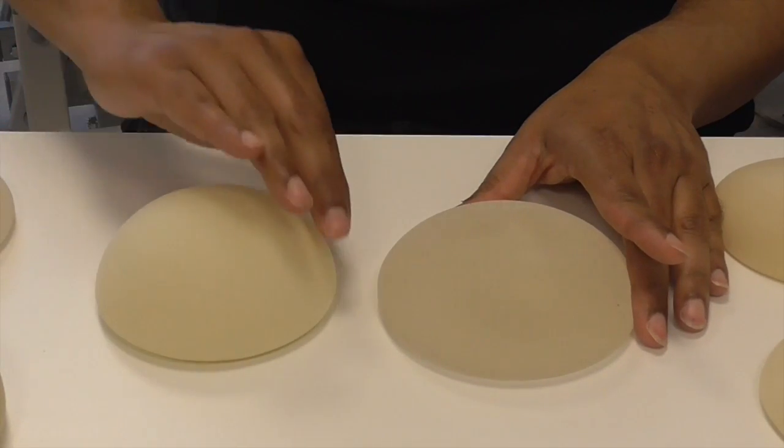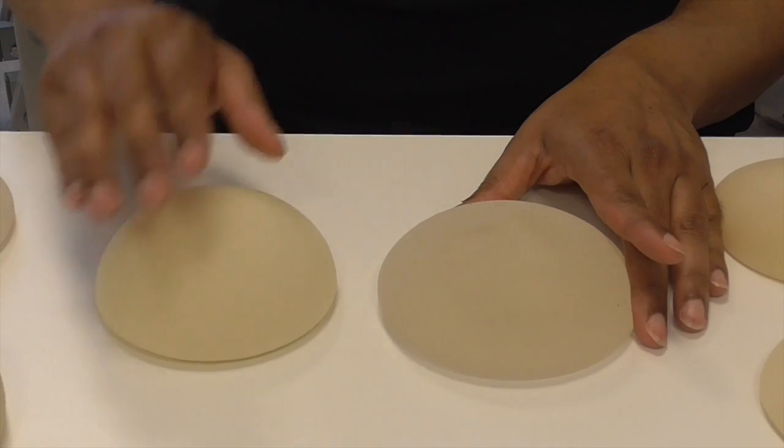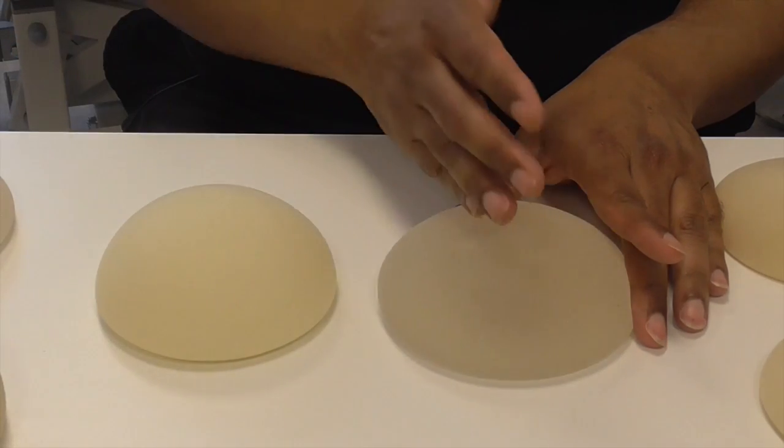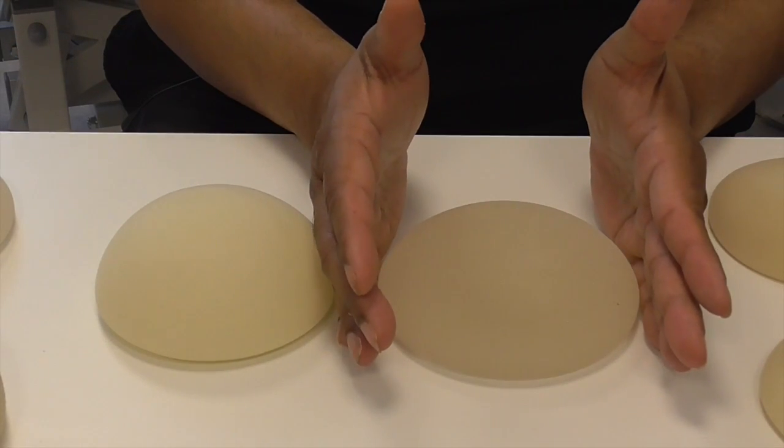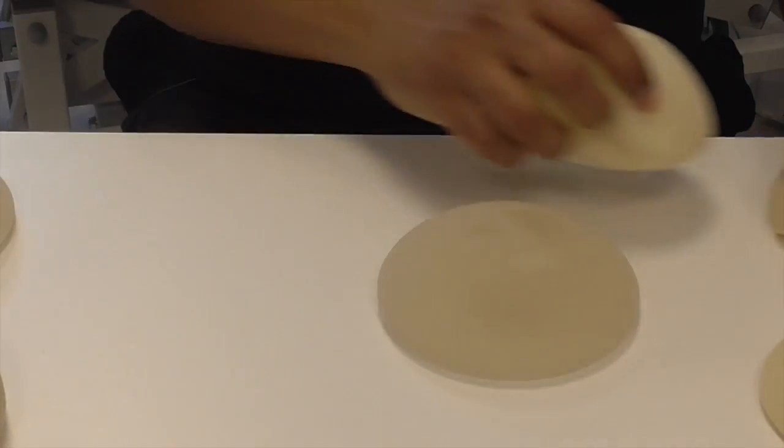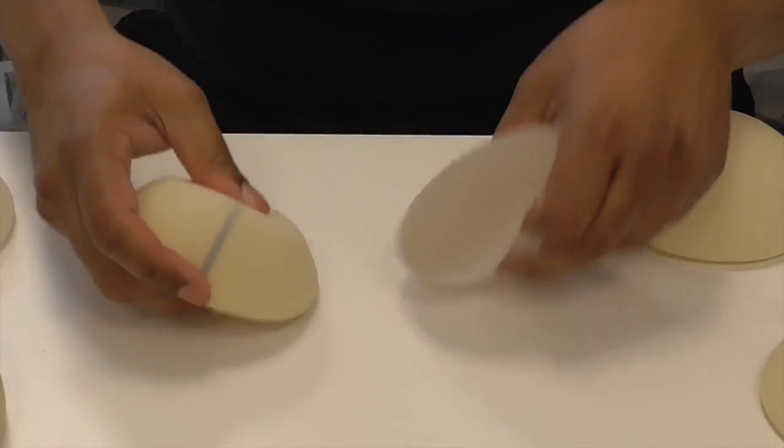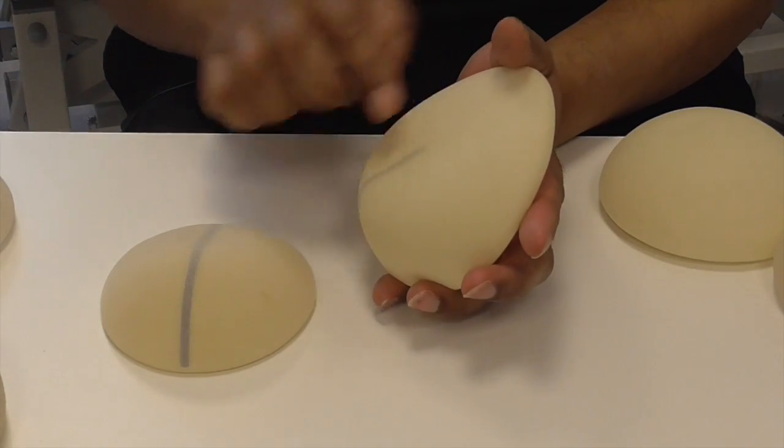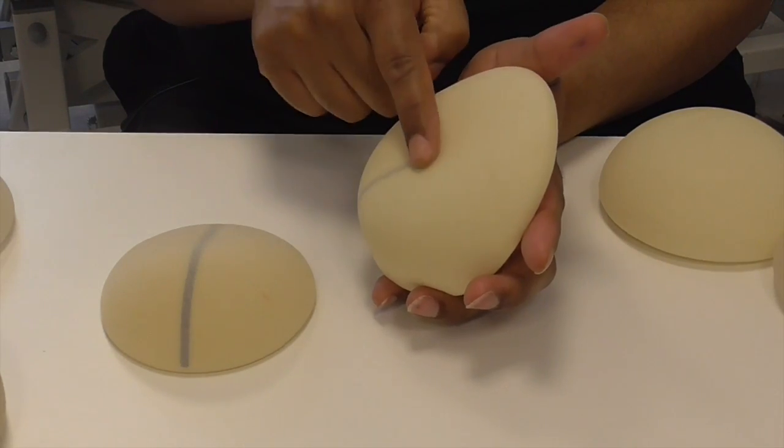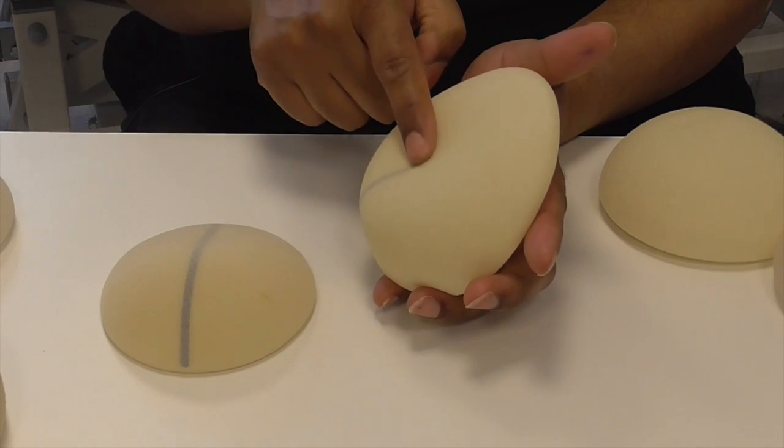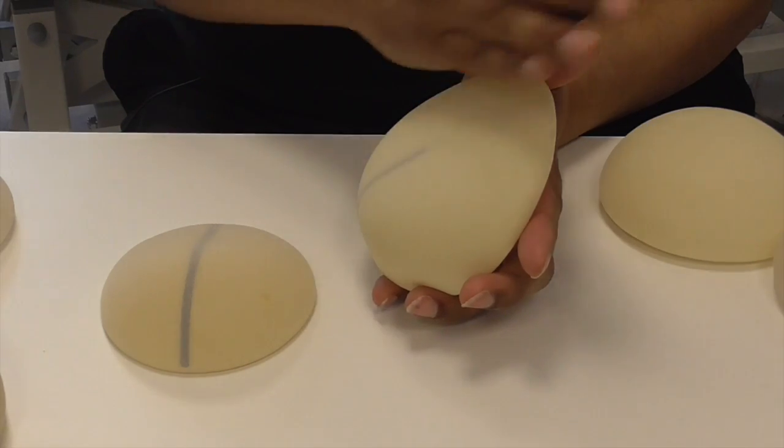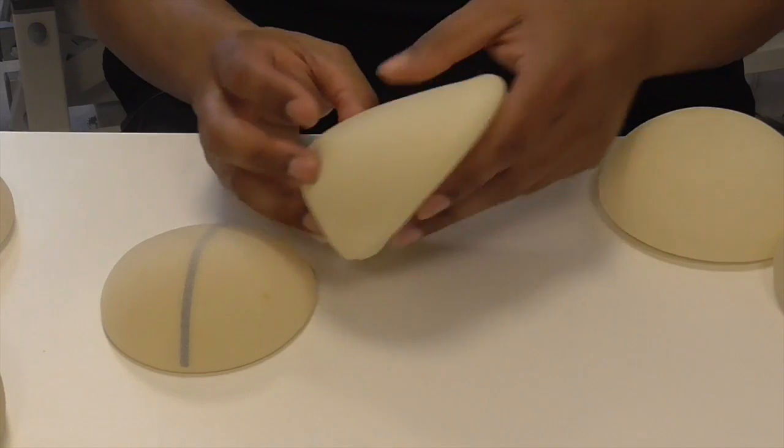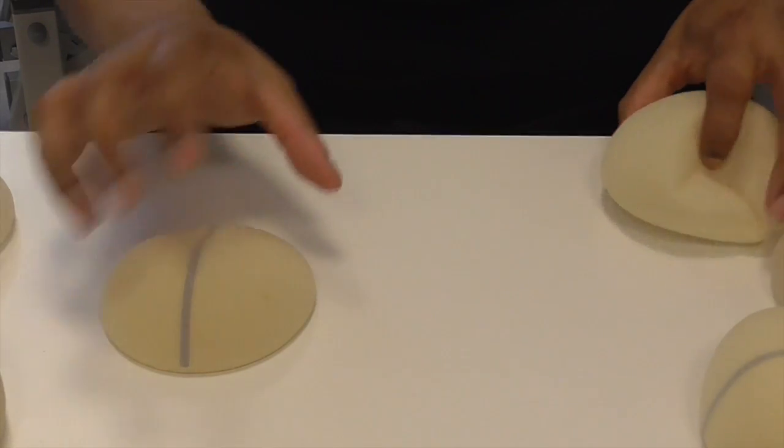You also look at what you call the projection. You've got to make sure that the height is the one you want. They have different varieties of base sizes versus projection. For the anatomical ones, you've got to look at the projection at the lower pole as opposed to how much projection of the upper pole. There's a wide variety of things to choose from.